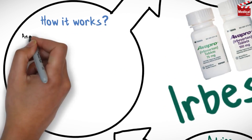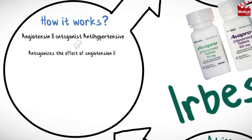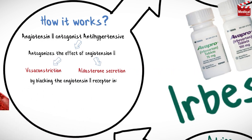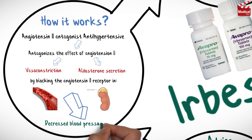Irbesartan is an angiotensin-2 receptor antagonist antihypertensive. It antagonizes the effect of angiotensin-2, which is responsible for vasoconstriction and aldosterone secretion, by blocking the angiotensin-2 receptors in vascular smooth muscle and the adrenal gland, leading to decreased blood pressure.